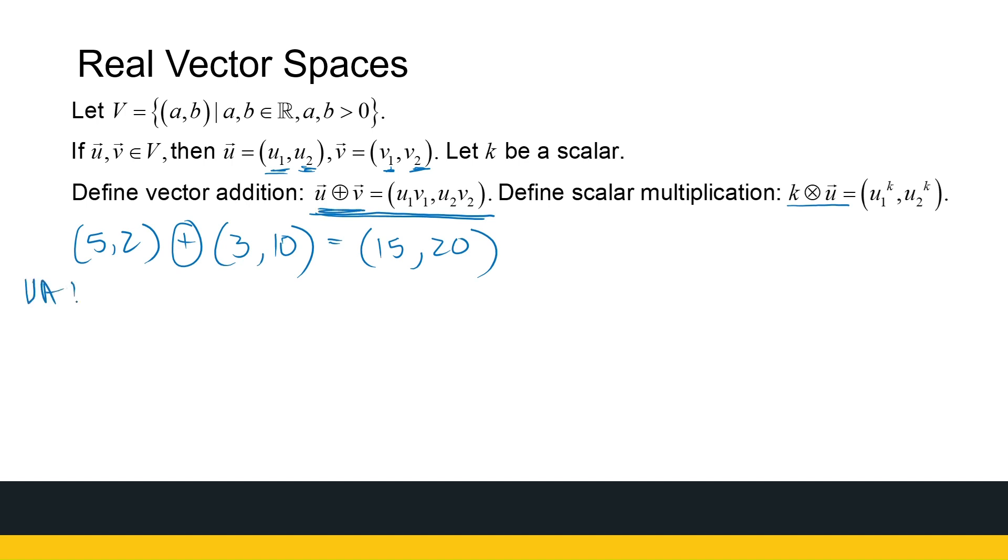So if I look at the first vector addition axiom, which says U1, U2 plus V1, V2 must again be inside my set. What we're saying is, am I always going to get, firstly, you're always going to get an ordered pair. That makes sense. The way addition is defined, I get an ordered pair out. But is the ordered pair going to be in the set? What's special about the set? Both entries are positive.